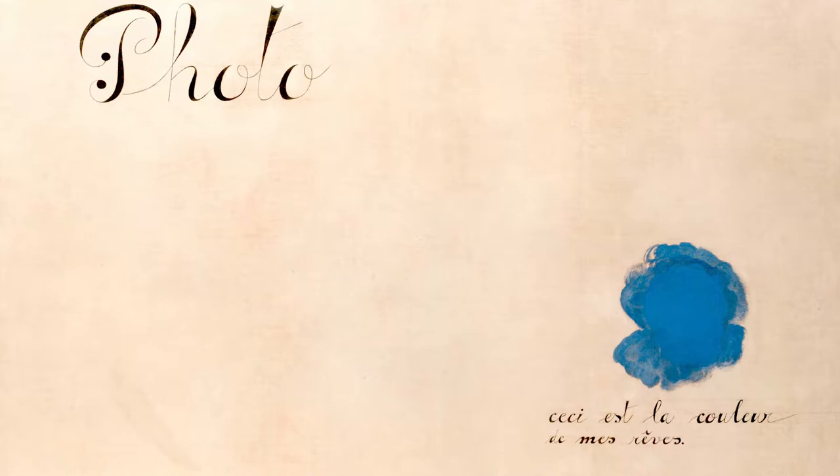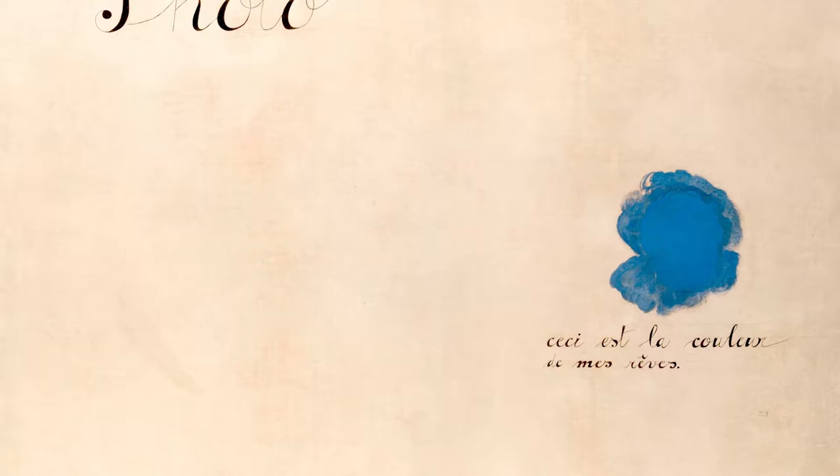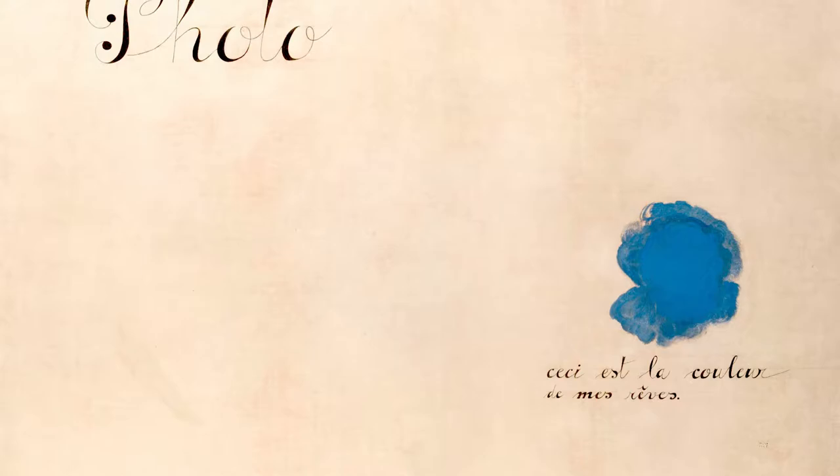Three elements float on this empty white canvas: the word 'photo', a stain of blue, and the phrase 'this is the color of my dreams.' The black letters sit on nearly invisible pencil lines, like in a child's writing pad. Breton went so far as to affirm that Miró perhaps was the most surrealist of all of us — a surrealist in its purest form who captured better than anyone the automatic, the childish, the dreamlike, what lives in the depths of the unconscious.